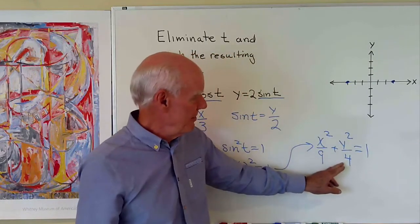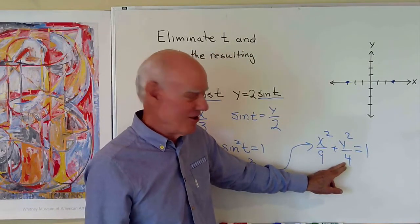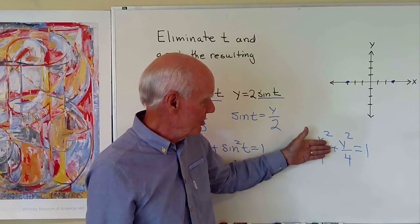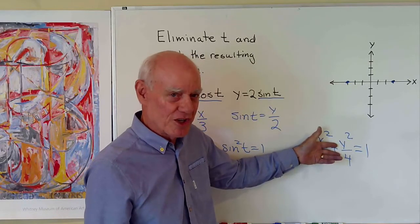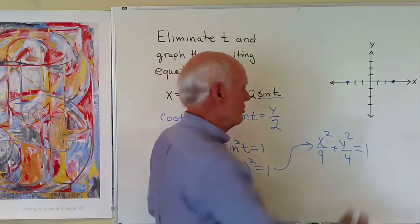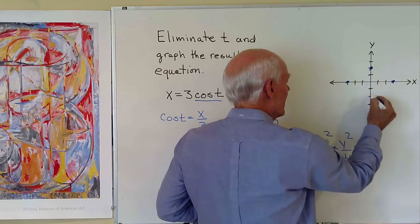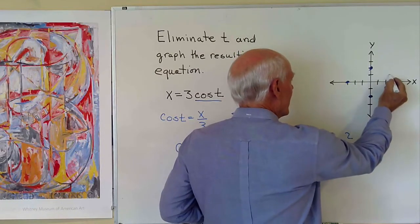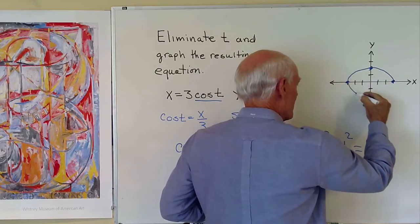And then to find the values of y, the y-intercepts, I'll let x be equal to zero, and I see the solutions to this equation are y equal plus or minus two. So it'll be two here, negative two down here, and I'll connect these with a nice smooth curve.